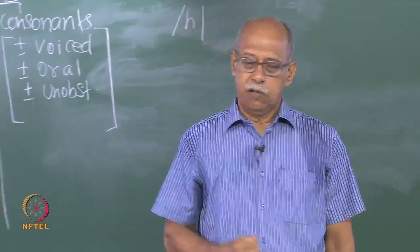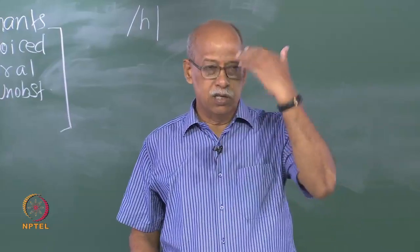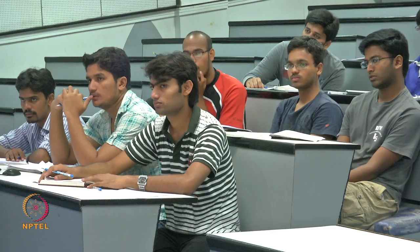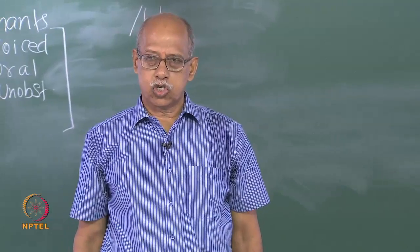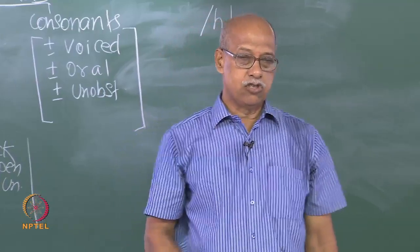With complete closure and gradual release: the blade of the tongue goes and touches the hard palate — let the blade of your tongue touch the hard palate up above in the roof of your mouth. Complete contact — keep it there, then slowly release it. Say 'shh' — as in church, as in bench, as in rich, as in cheer.